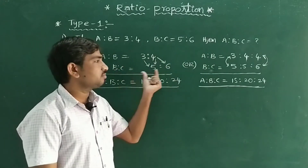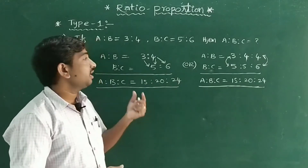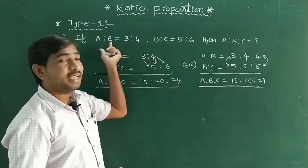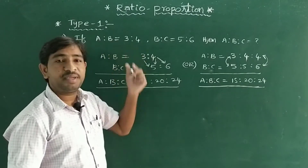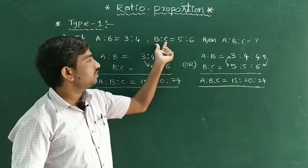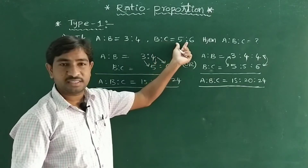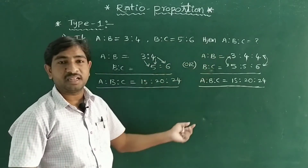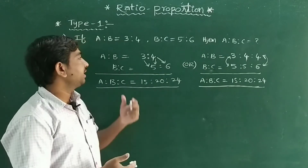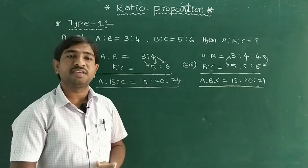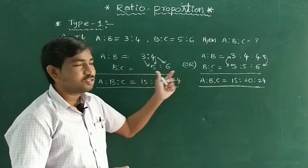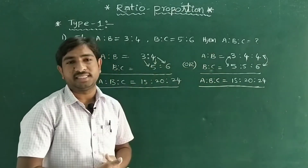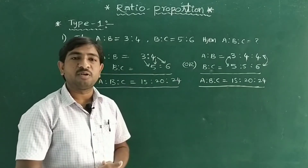These are shortcut tricks. In the general method, A:B = 3:4 means A/B = 3/4 and B:C = 5:6 means B/C = 5/6. Then we find A:B:C using cross multiplication — that is the long method. The shortcut second method is very easy. Let us see one more example problem.